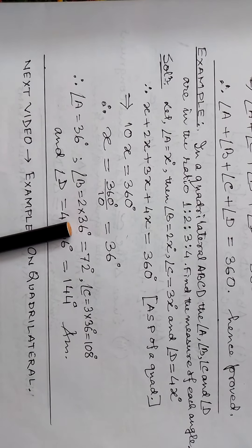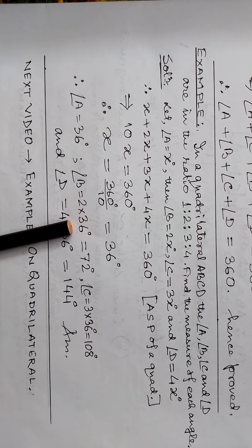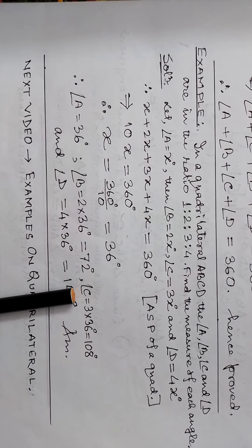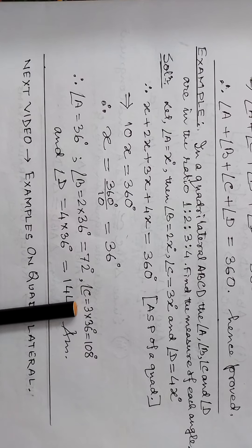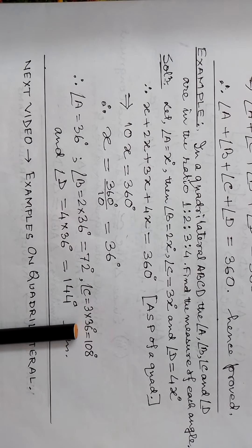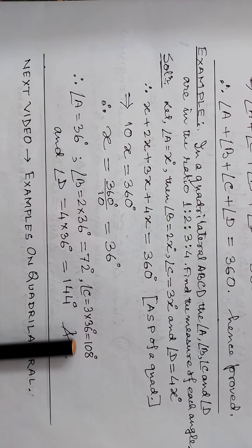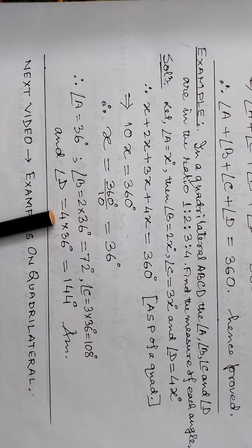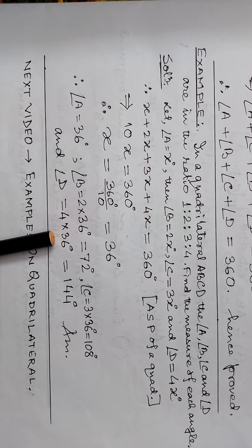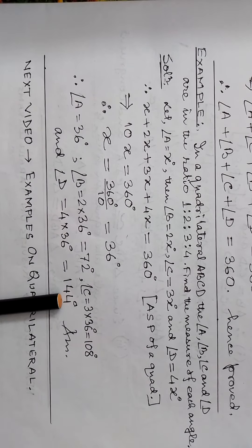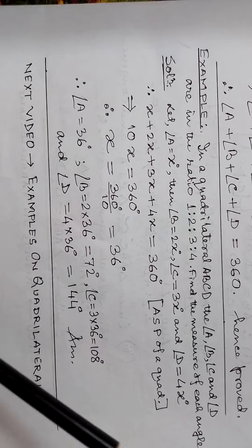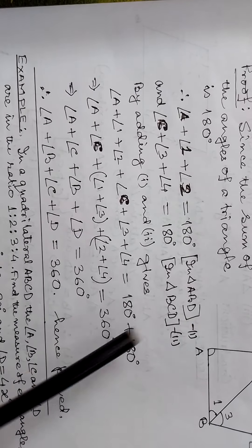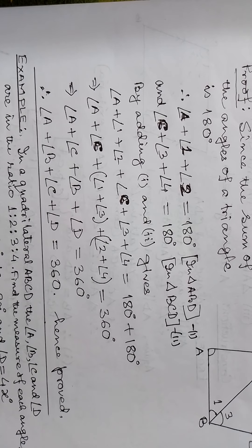Angle A equals x equals 36 degrees. Angle B equals 2 times 36 degrees, that is 72 degrees. Angle C equals 3 times 36 degrees, that is 108 degrees. And angle D equals 4 times 36 degrees, that is 144 degrees. That is clear.